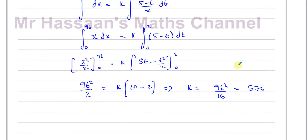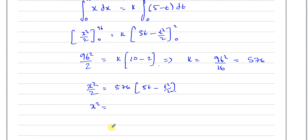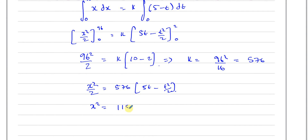Now that I know k = 576, I can form the equation. We have x²/2 = 576 × (5t − t²/2). Multiplying both sides by 2, the general equation is x² = 1152 × (5t − t²/2). That's my general equation, including the constant of integration and the value of k, which I can use to solve any problem they ask.